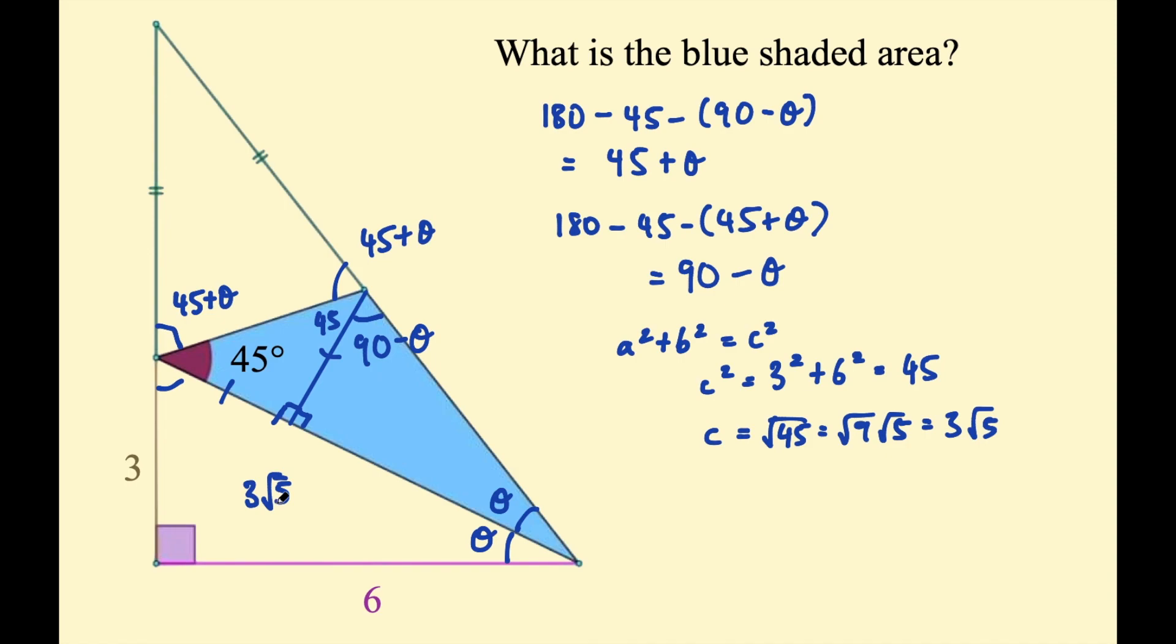We know the entire length is 3 root 5. So this part of that length must be one lot of root 5. This length here must be two lots of root 5. That means that if these two legs are equal, this length in here must also be root 5. Now we have that perpendicular height, we have the base, we can work out the area. The area is going to be the base 3 root 5 multiplied by the height divided by 2. So 3 root 5 times root 5 is 15. It's going to be 15 on 2, or 7.5. That's the area of that blue triangle.